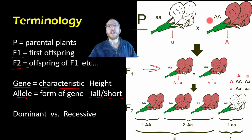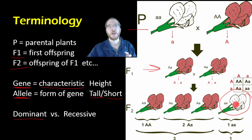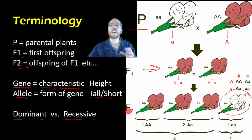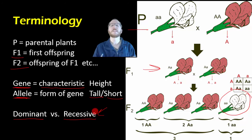Mendel also developed the idea of dominance versus recessive. When two different alleles paired up — like purple flowers versus white flowers — one of them always won out in the F1. Every F1 plant looked like one parent, so whichever allele won out was called dominant, and the one that disappeared was called recessive. Critically, the recessive trait wasn't officially gone — in the F2s, three out of four offspring showed the dominant trait, but one showed the recessive parent. So the recessive trait was hiding, but not lost, and could reappear in later generations.